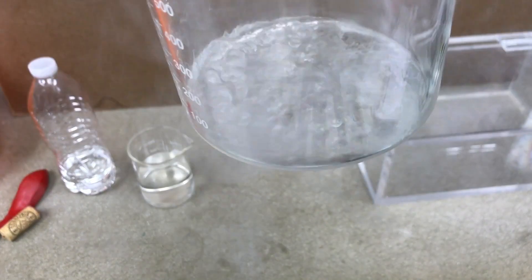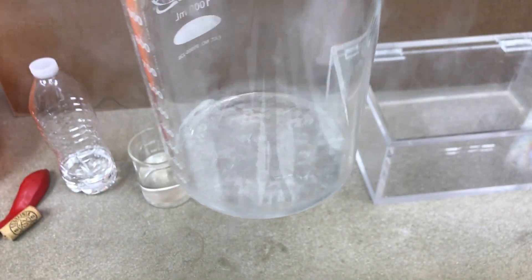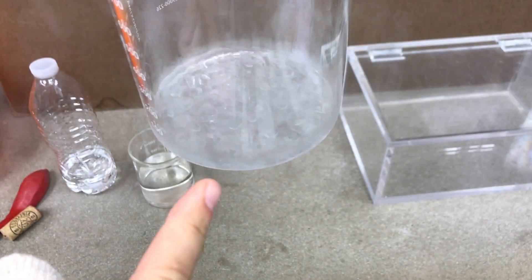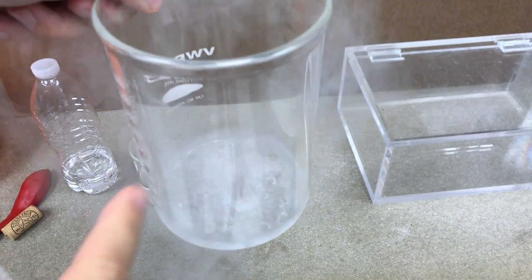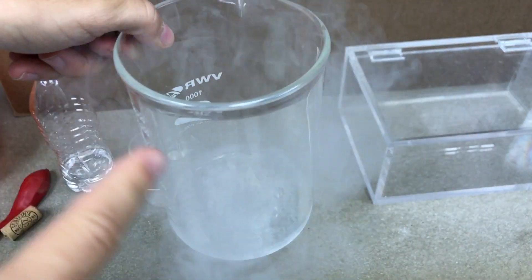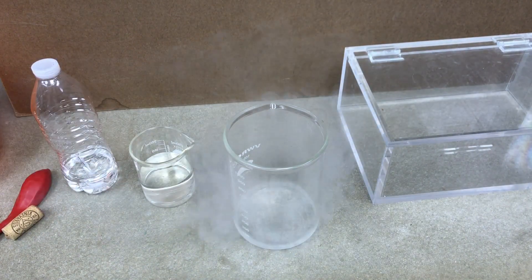This is liquid nitrogen in there. That is the same nitrogen that you see in the air, except that it's in liquid form. And it's so cold that it's boiling. It's boiling and turning into a gas. And then that gas is condensing the water vapor in the air, and it makes that cloud. And there you go. That is liquid nitrogen.